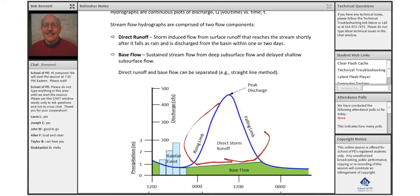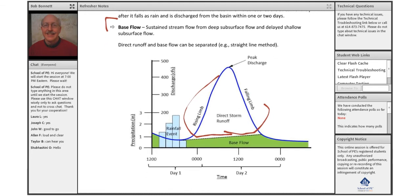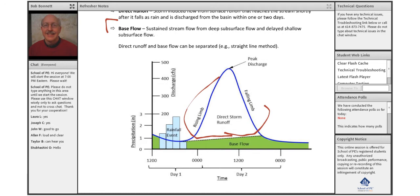The stream flow also includes what's referred to as base flow, which is primarily the subsurface flow or groundwater flow coming into the stream. The direct runoff and base flow can be separated using the straight line method. You see that the base flow is shaded on this particular figure.